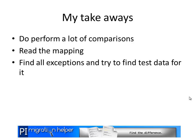My key takeaways from this Business Connector migration project: first, perform a lot of tests — the more comprehensive the document comparison, the easier it is to find where your new mapping differs from the original. Second, read the mapping because it gives you easy ways to figure out how information is filled in. Third, find all the exception cases — business rules like discounts or conditional logic — and note them so you can search for test cases that specifically cover those scenarios.